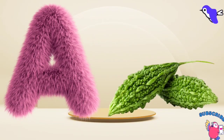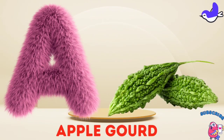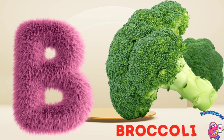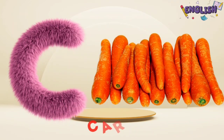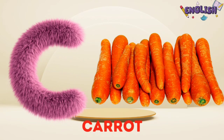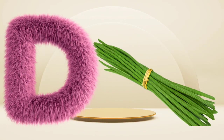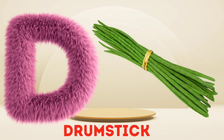A is for Apple Gourd. A, A. Apple Gourd. B is for Broccoli. V, V. Broccoli. C is for Carrot. K, K. Carrot. D is for Drumstick. D, D. Drumstick.